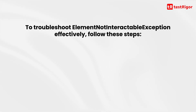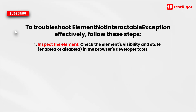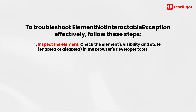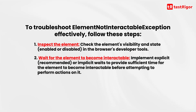Addressing element not interactable exception. To troubleshoot this exception effectively, follow these steps. Number one, inspect the element — check the element's visibility and state, enabled or disabled, in the browser's developer tools. Number two, wait for the element to become interactable — implement explicit (recommended) or implicit waits to provide sufficient time for the element to become interactable before attempting to perform actions on it.